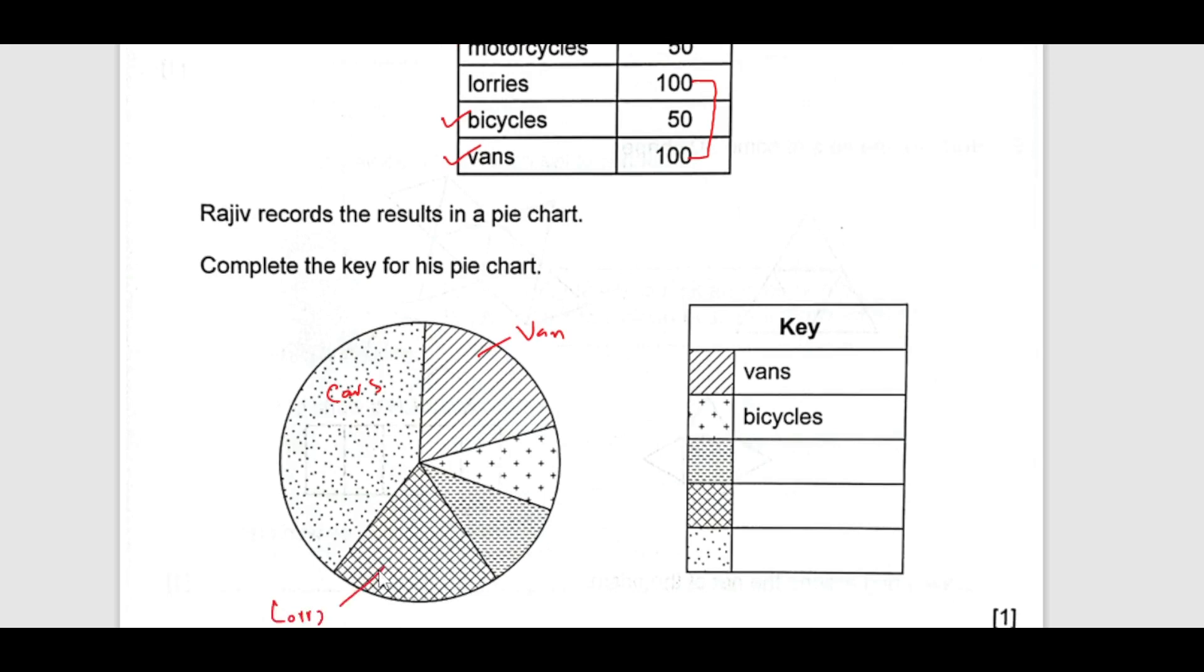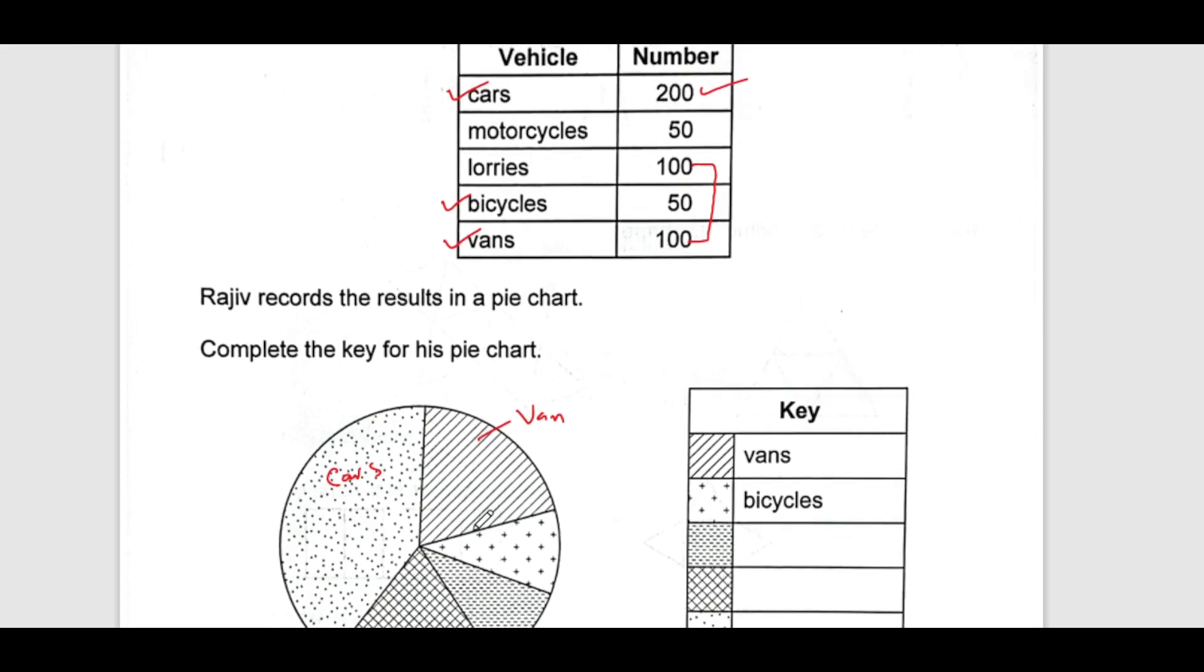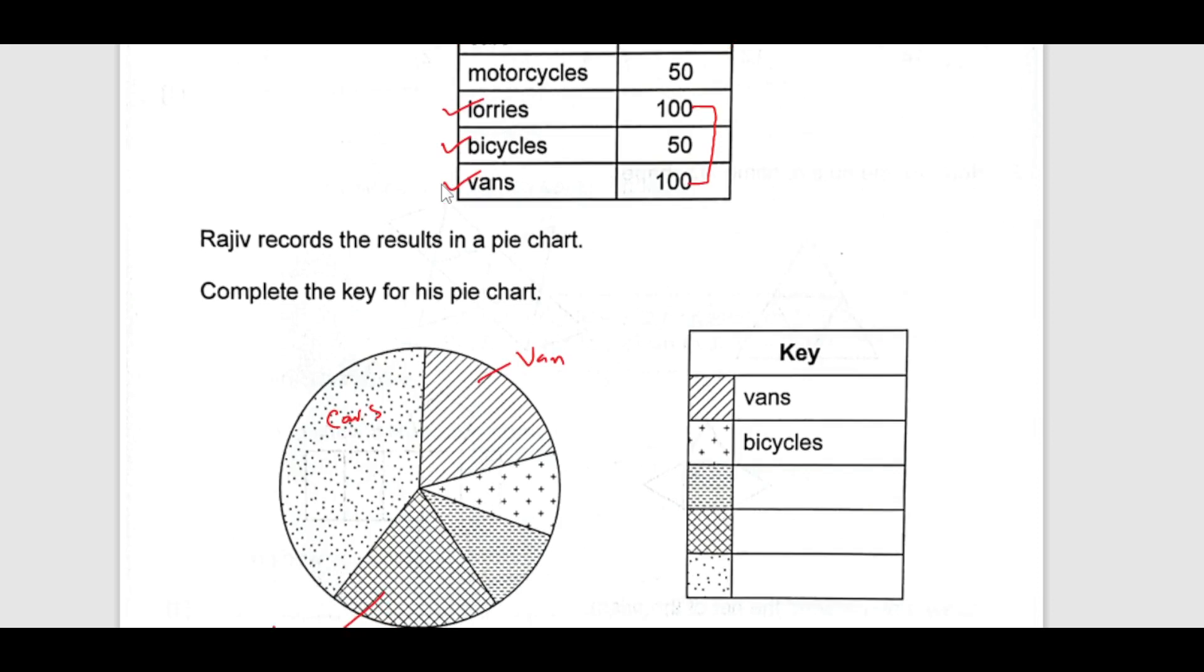Then what is left? We are done with lorries and we are left with the motorcycles now. Bicycle, this is bicycle and then this is going to be motorcycle. I am going to write down here. This is motorcycle and this squared one is lorries, and then this one is cars.